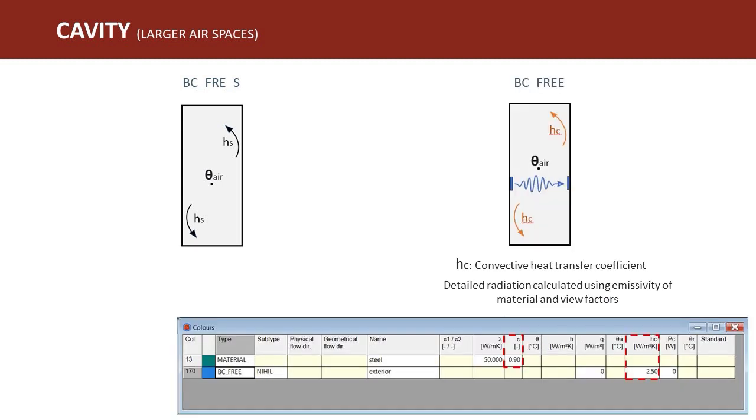The type BC_FREE, on the other hand, considers a convective node temperature in the cavities, linked with a convective heat transfer coefficient h_c to the surfaces, and detailed infrared radiation via view factors across the cavity.